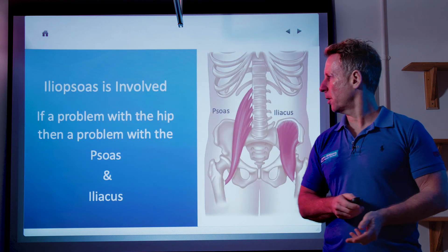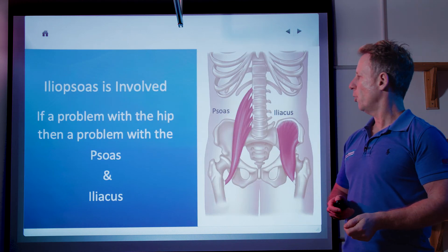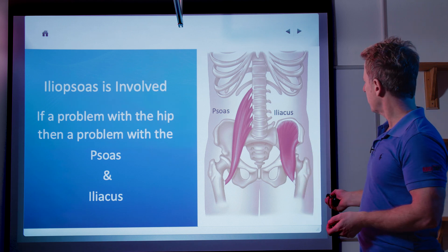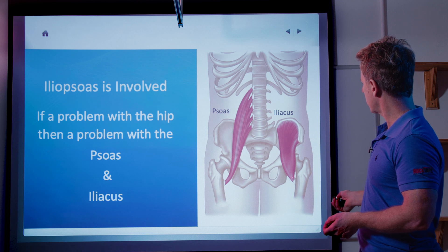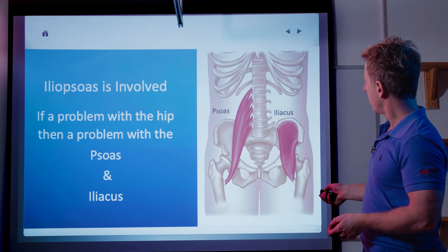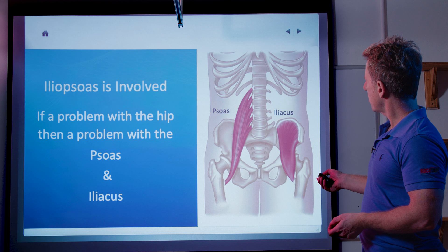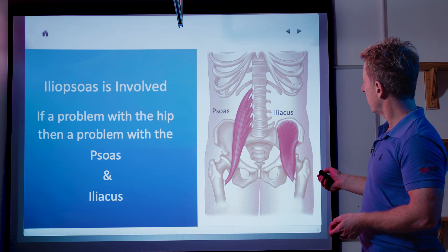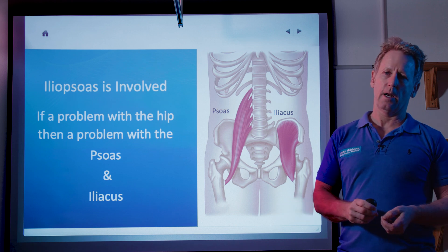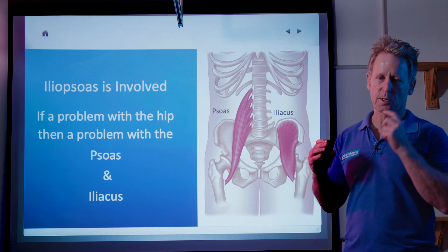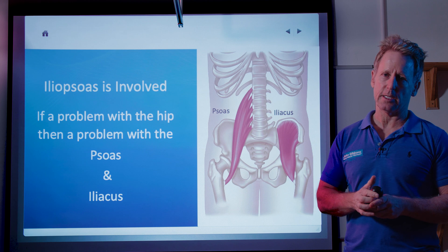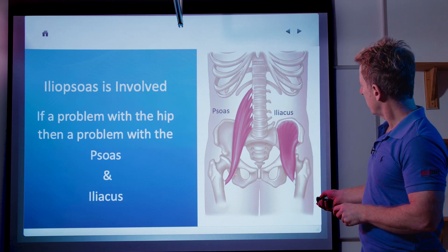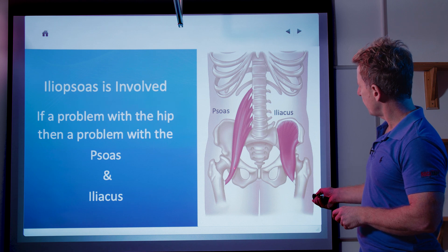The muscle we're going to discuss is the iliopsoas — the iliacus from the iliac fossa comes down to the lesser trochanter, and we've got psoas major and psoas minor. Psoas major runs from L2, 3, 4, and 5, whereas psoas minor runs from T12 and around L1, going to the pectineal line. This is the majority of the psoas major coming down.